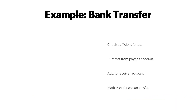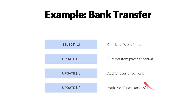A common example used to illustrate a transaction is a bank transfer. In this use case, we want to transfer money from one bank account into another. We're going to assume that all the bank account data is persisted in a single database. To do this, we first need to make sure there are sufficient funds on the payer's account, then subtract that amount from the payer's account, add it to the receiver's account, and finally mark the transaction as successful.